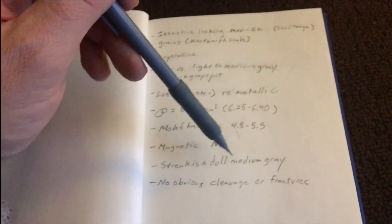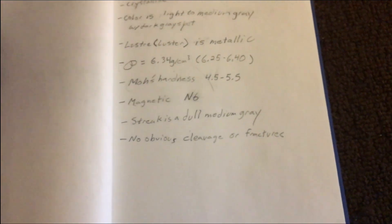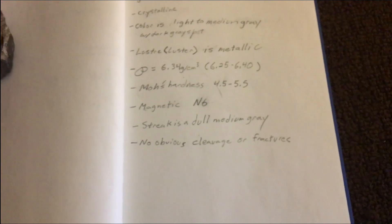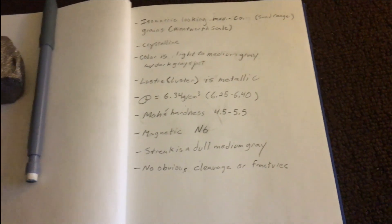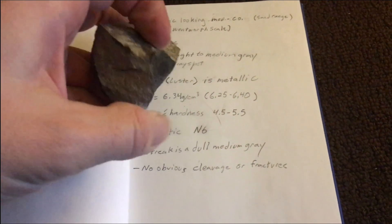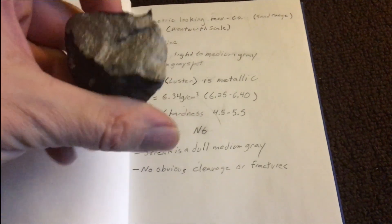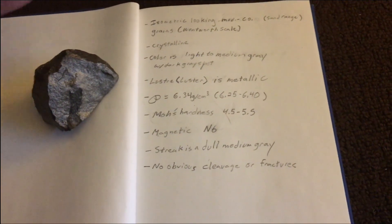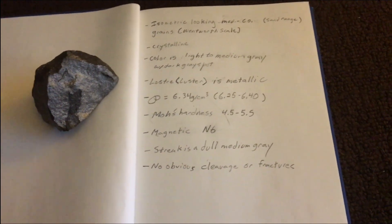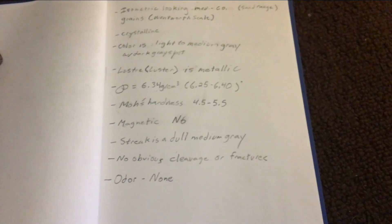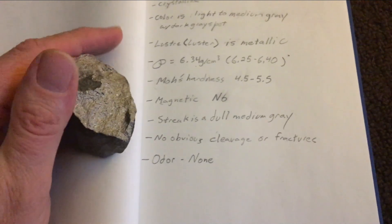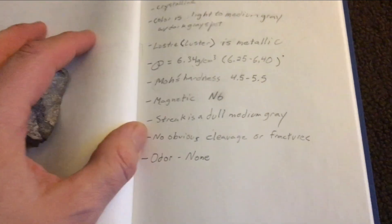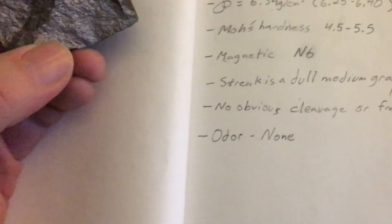So to recap all properties: density is 6.335 g/cm³, Mohs hardness is 4.5 to 5.5, not magnetic, streak is dull medium gray, and there are no obvious cleavage or fractures visible on the individual grains under hand lens. Now we can try to put this into a known category. This was just handed to me — I was not given a location or conditions. I can tell you for sure this is not native to northwest Indiana or northeastern Illinois, so my guess is it came in as railroad ballast. One more test I forgot — odor: none. It does not smell irony or like sulfur — no odor at all, which is consistent with it not being iron or having much iron in it.